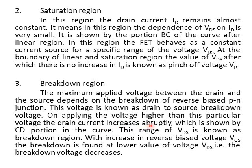The drain current increases abruptly in the breakdown region, shown by portion CD of the curve. This range of VDS is known as the breakdown region. With increase in reverse bias voltage VGS, the breakdown occurs at lower values of VDS. So as VGS increases in magnitude, the breakdown voltage decreases.